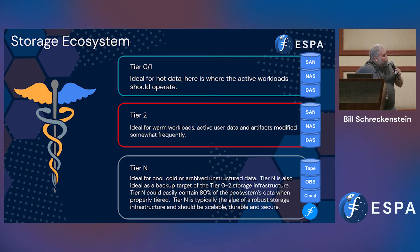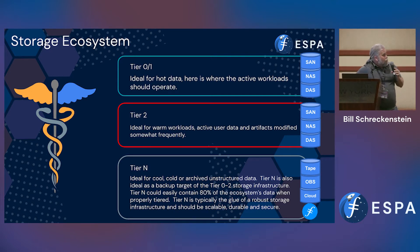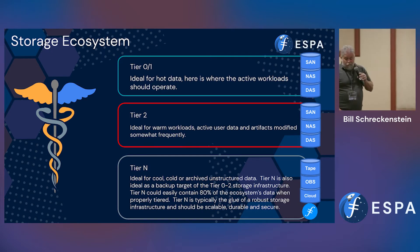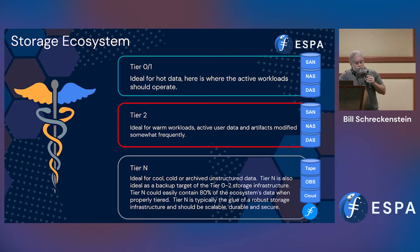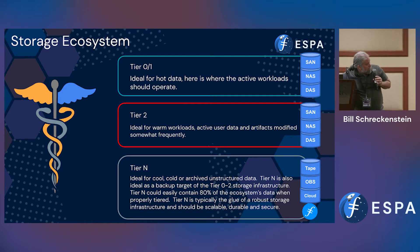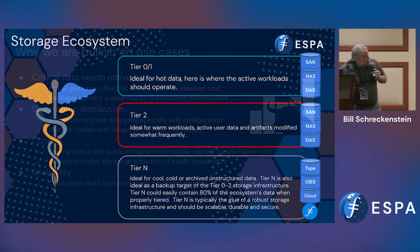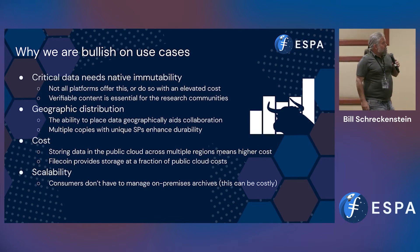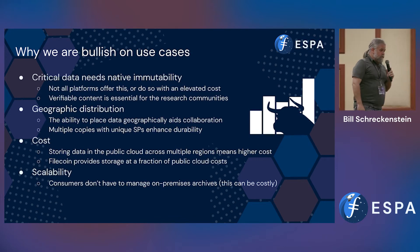As we start looking at our use case heat map here, we see scientific archive, public archive, and analytics archive or data lake. We'll talk about all of the other data sets we've mentioned already. But why are we bullish on these?